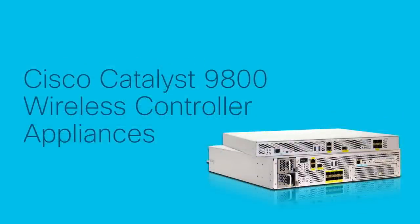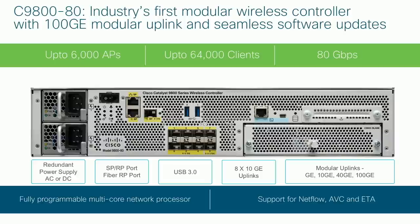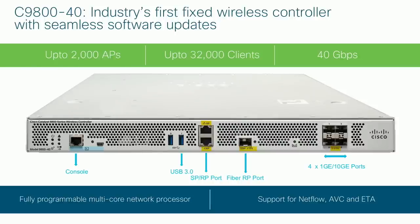The Catalyst 9800 appliance lineup starts with the 9880 — the industry's first modular wireless controller with 100-Gigabit uplinks. It has modular uplink interfaces supporting 1G, 10G, 40G, and 100G. It also features fixed 8x10-Gig fiber optic modules for 80 Gbps of throughput, a dual power supply, and can support up to 6,000 APs and 64,000 wireless clients. The smaller 9840 supports 2,000 APs and 32,000 wireless clients with up to 40 Gbps throughput.